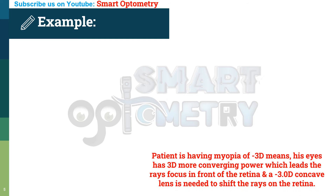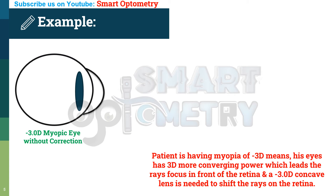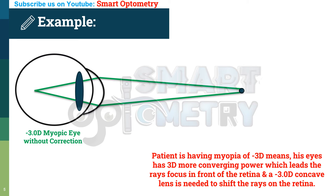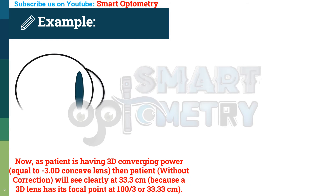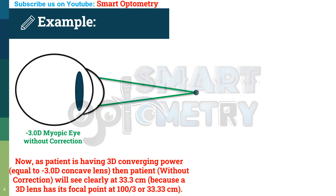A patient having myopia of minus 3 diopters means the eye has 3 diopters more converging power, which causes the rays to focus in front of the retina. A minus 3 diopter concave lens is needed to shift the focus onto the retina. Since the patient has 3 diopters of extra converging power, the patient will see clearly at 33.3 cm, because a 3 diopter lens has its focal point at 100 divided by 3, or 33.33 cm. So the patient's far point is at 33.33 cm.